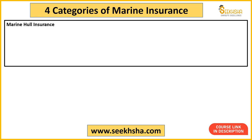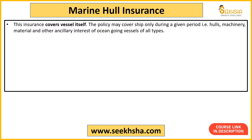Now, there are 4 categories of marine insurance. One is marine hull insurance, one is marine cargo policy, then freight insurance, and then legal liability insurance. Marine hull insurance basically covers a vessel — the ship itself. The ship is what is covered. This is generally a one-year policy. Various parts are covered under hull insurance: the hull and main body of the ship, the machinery used, and all other equipment.